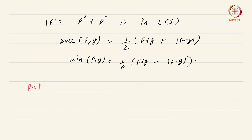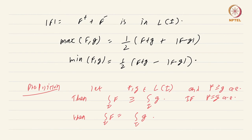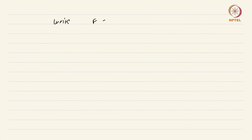Let us proceed and see the properties of the Lebesgue integral under ordering. Proposition: let f and g be Lebesgue integrable, and f greater than or equal to g almost everywhere. Then the integral over I of f is greater than or equal to the integral over I of g. If f equals g almost everywhere, then the integrals are equal. Write f as u minus v and g as u₁ minus v₁, with u, v, u₁, v₁ all upper integrable functions.